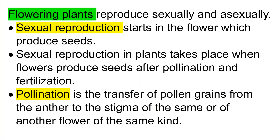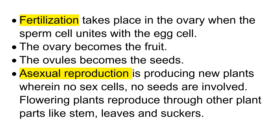Flowering plants reproduce sexually and asexually. Sexual reproduction starts in the flower which produces seeds. Sexual reproduction in plants takes place when flowers produce seeds after pollination and fertilization. Pollination is the transfer of pollen grains from the anther to the stigma of the same or another flower. Fertilization takes place in the ovary when the sperm cell unites with the egg cell — the ovary becomes the fruit and the ovules become the seeds. Asexual reproduction produces new plants with no sex cells or seeds involved; flowering plants reproduce through other plant parts like stem, leaves, and suckers.